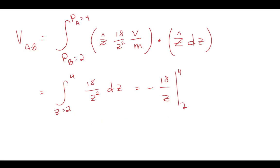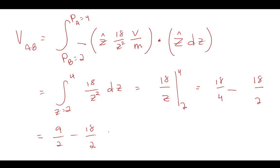The next step is to perform the evaluation. Make sure we don't get tricked because we do have a minus sign — and in fact, this negative cancels out with the other one. Simplifying, we get 9 halves minus 18 halves, which equals minus 9 halves, or minus 4.5 volts. That is our voltage at A with respect to B.